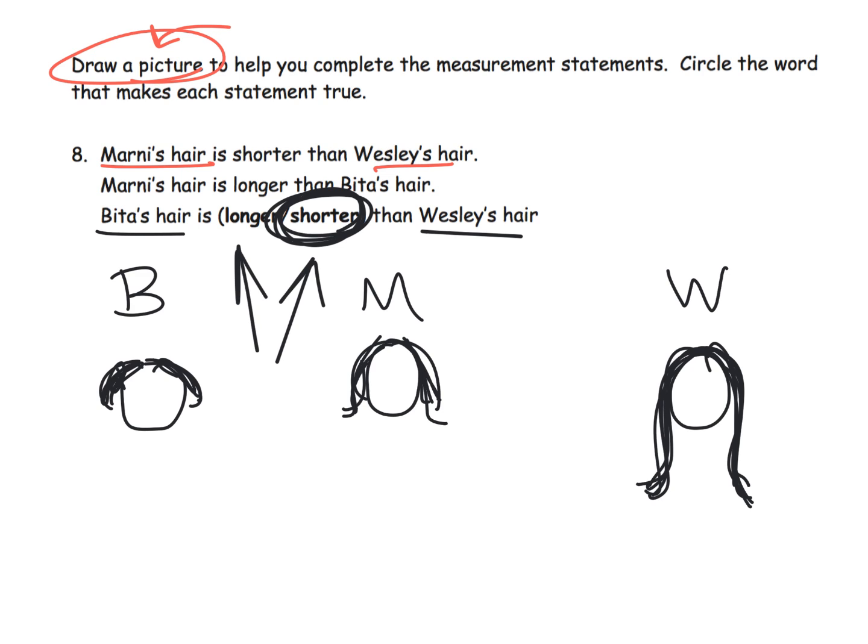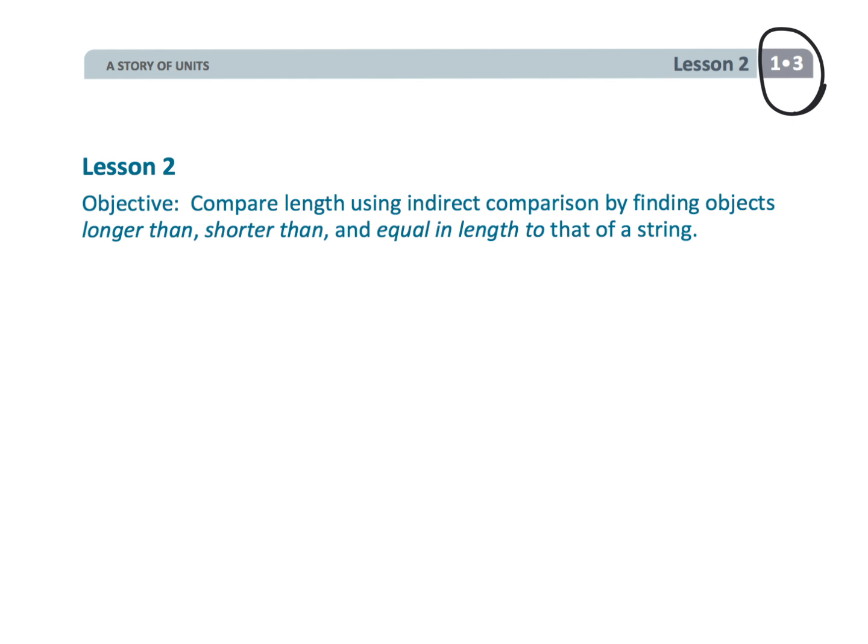And that wraps up first grade module three lesson two. Students are comparing objects and they're comparing them indirectly using that strip of paper as the middleman.